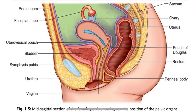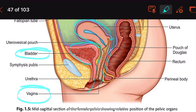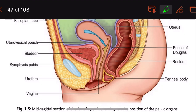Regarding the relations of the vagina: anteriorly there is the bladder and urethra; posteriorly there is the rectum, perineal body, and pouch of Douglas. The upper one-third anteriorly is related to the base of the bladder; the lower two-thirds is related to the urethra, the lower half of which is firmly embedded in its wall.